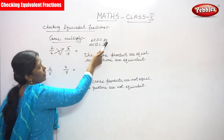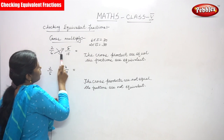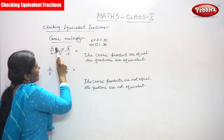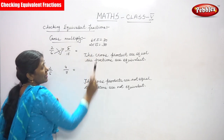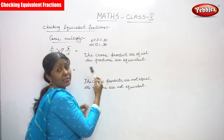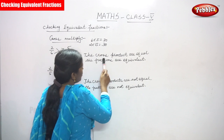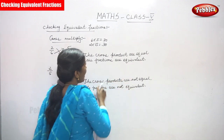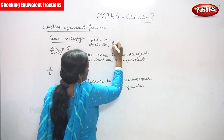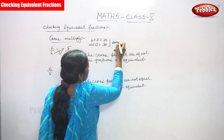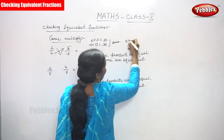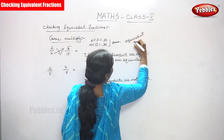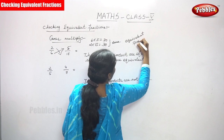6 into 5 you get 30. The numerator and denominator multiplied cross-wise both give 30. This is called the cross product. The cross products are equal, so the fractions are equivalent. Both answers are the same — this is an equivalent fraction.